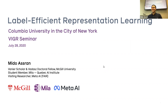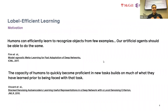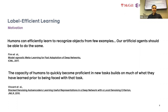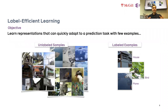Thanks for the introduction, it's a real pleasure to be here. So label-efficient representation learning — my interest in this problem really stems from this hallmark of human intelligence. Humans have this ability to efficiently learn to recognize new objects from very few examples, and we'd like our artificial agents to do the same. The ability for humans to quickly become proficient at new tasks really depends on much of what they've learned prior.